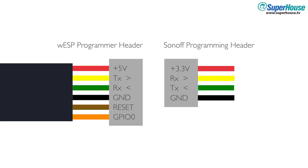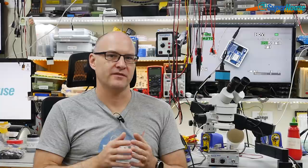Now look at the pinout on the WESP32 programming header and compare it to the programming header on the Sonoff. As you can see, the pins that are present are the same on both of them and they match up.